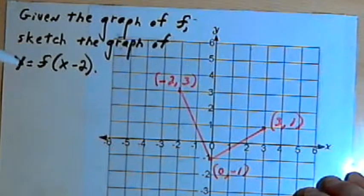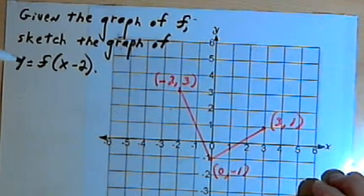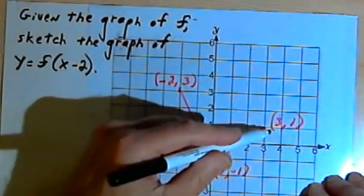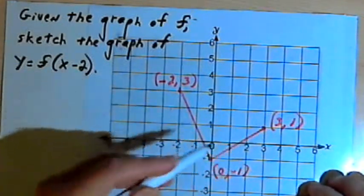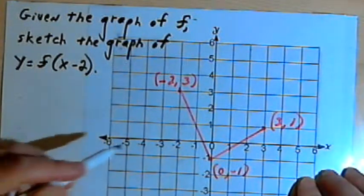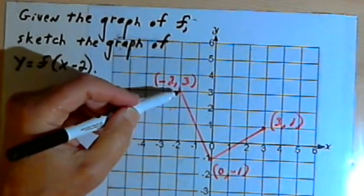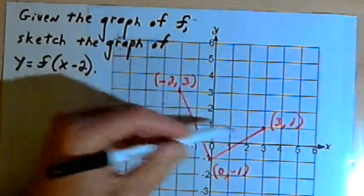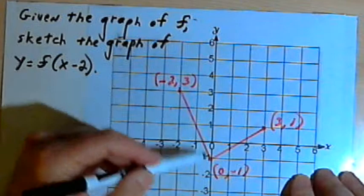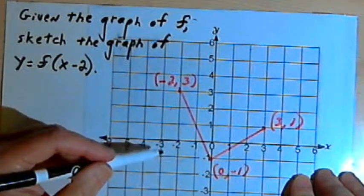So the new graph that we're going to have is going to be a horizontal shift, or translation, of the original graph. In other words, this original graph is going to move sideways to the left or to the right. To find out exactly what's going on, what we're going to do is look at some points, like the ones I've labeled, and see how they're going to move to the left or the right for our new graph.